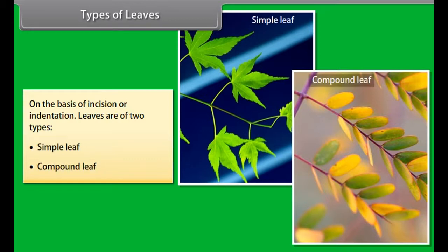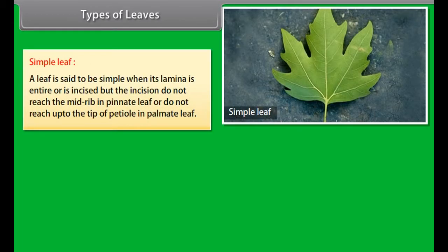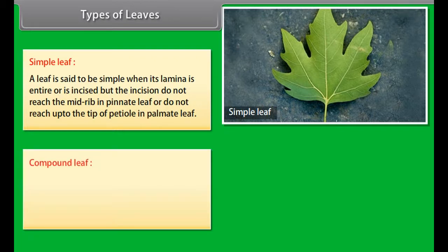Parallel venation occurs when the veins are parallel to each other within a lamina and do not form a network. Types of leaves: On the basis of incision or indentation, leaves are of two types—simple leaf and compound leaf.